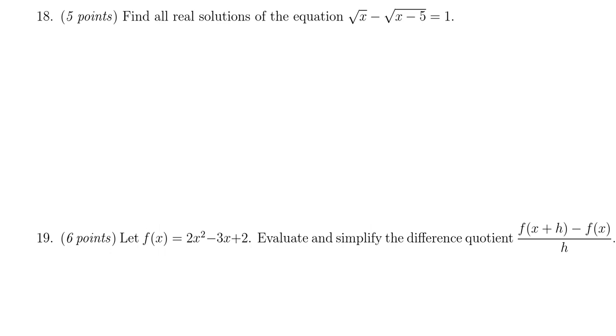The strategy we want to employ here is we want to separate the radicals. So just get one square root on, let's say, the left-hand side all by itself. Because of the sign here, I'm actually just going to add the square root of x minus 5 to both sides. So we get the square root of x is equal to 1 plus the square root of x minus 5.